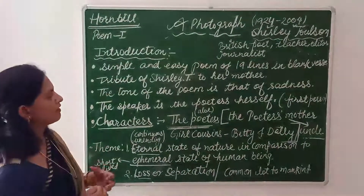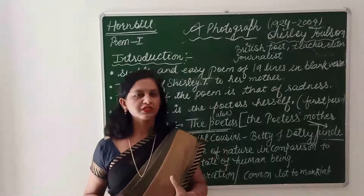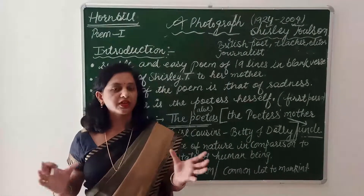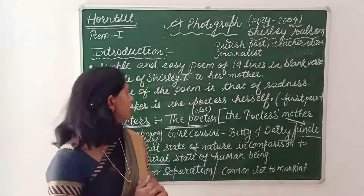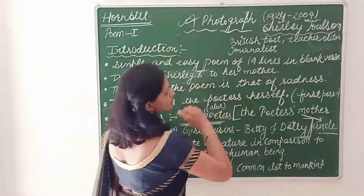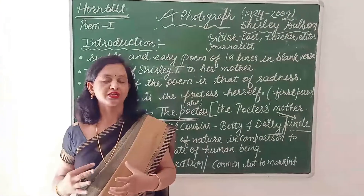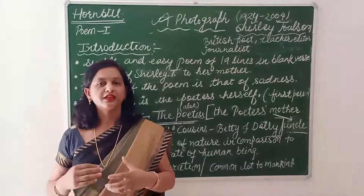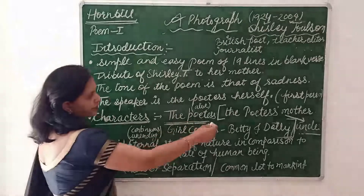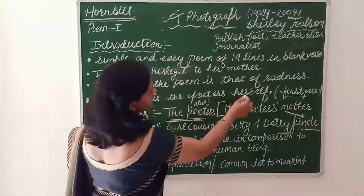It is a very simple and easy poem of 19 lines written in blank verse. Blank verse means the lines will not rhyme. The tone of the poem is that of sadness because the poetess is missing her mother very much — she is no more in the world and the poetess is feeling alone. This poem has been written in first person, so it is clear that the speaker is the poetess herself.